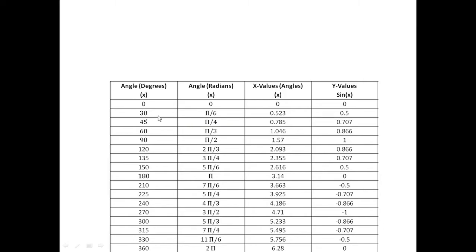To know how to convert degrees into radians, you can watch a video titled 'Radians' — the link has been given in the description. So 30 degrees is pi by 6, 45 is pi by 4, and 360 is 2 pi. Then putting pi equals to 3.14, we get pi by 6 as 0.523, pi by 4 as 0.785, and so on up to 2 pi.